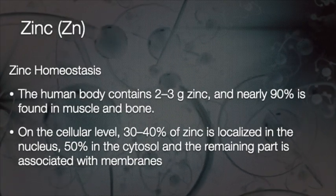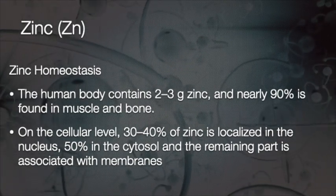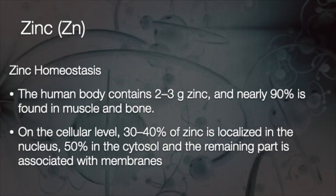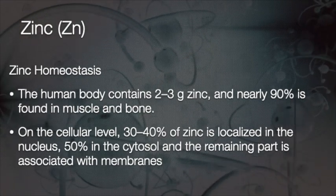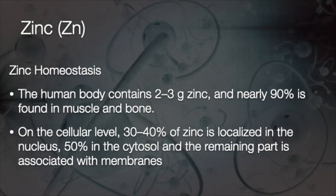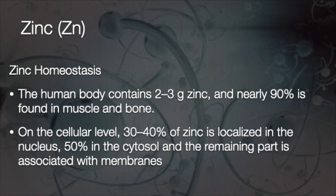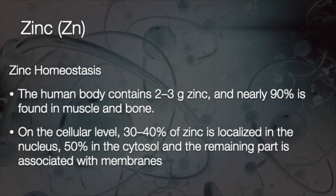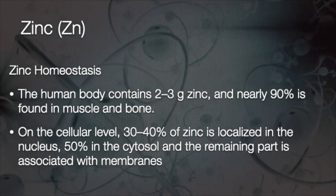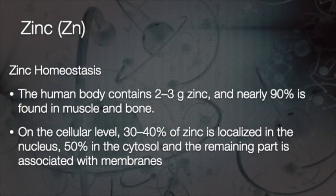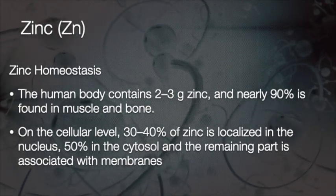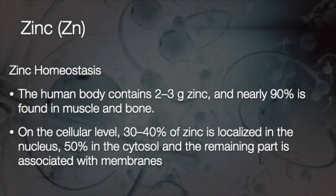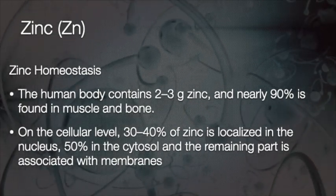So how much Zinc does the human body contain? About 2–3 grams, and nearly 90% of this is found in muscle and bone. At the cellular level, 30–40% of Zinc is localized in the nucleus, 50% in the cytosol — the liquid inside the cell — and the remaining part is associated with membranes.